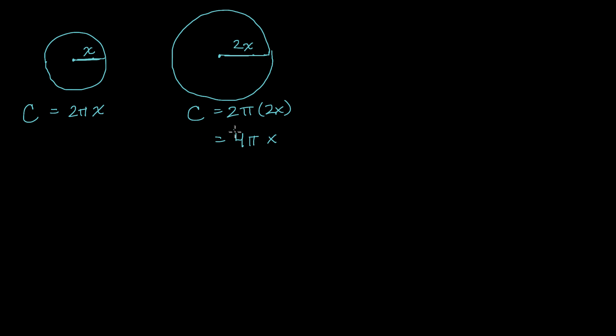So we see here that this circumference is twice as large as this one. To go from 2πx to 4πx, you have to multiply by 2. So you double the radius, it doubled the circumference.